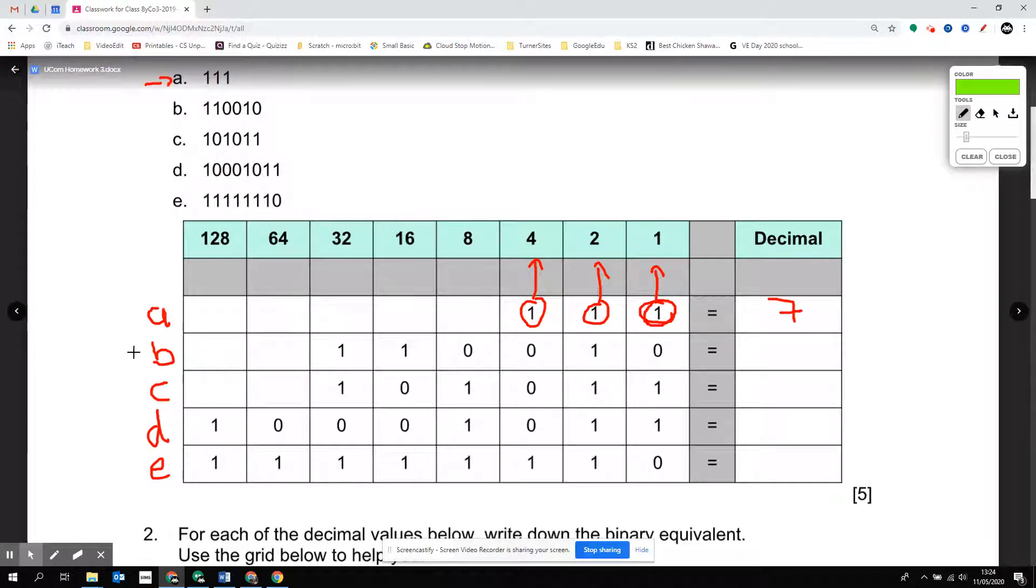Looking at b now: 110010. So because this is a zero, I ignore it. The 1. Because this one is a 1, I take 2. Ignore this, ignore this. Another 1, 16. And another 1, 32. So I would do 32 plus 16 plus 2 which is 50.